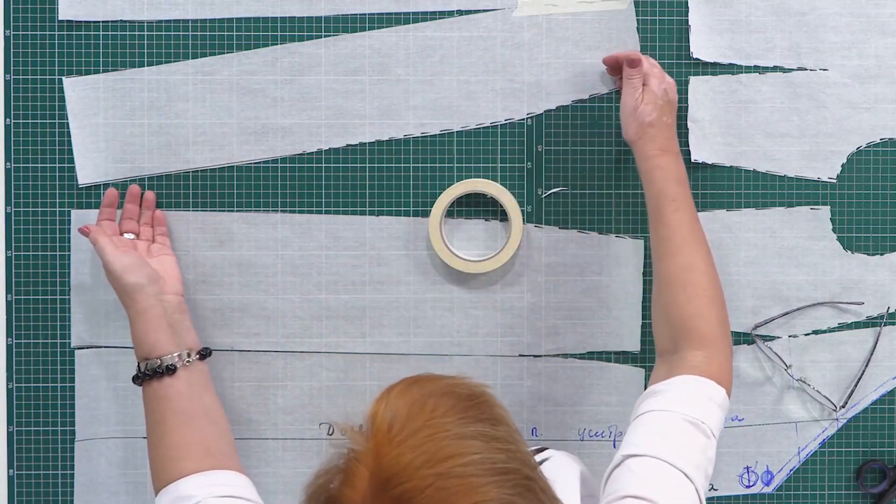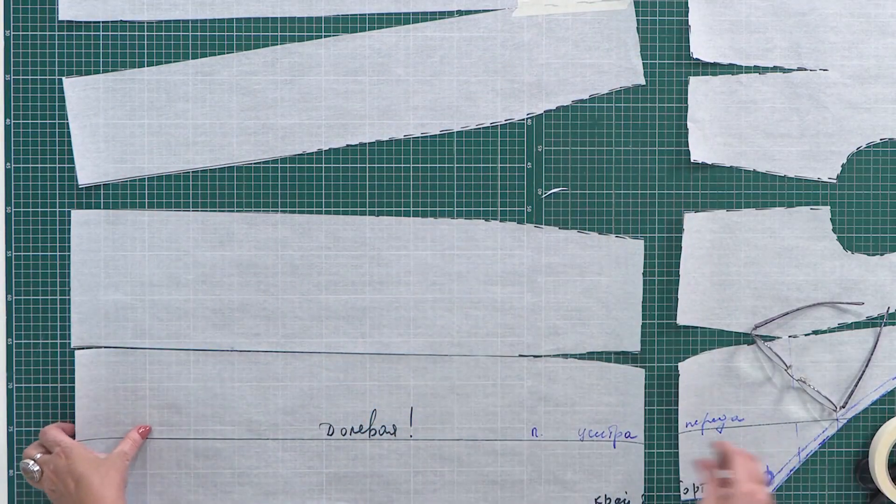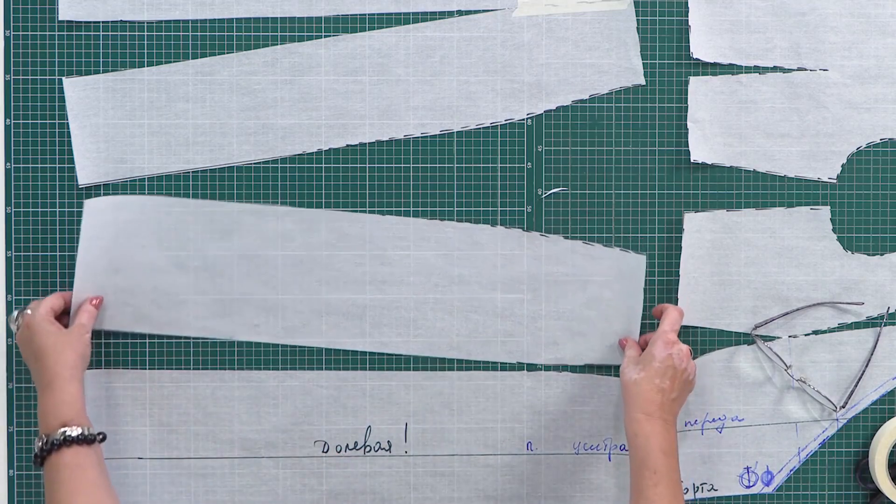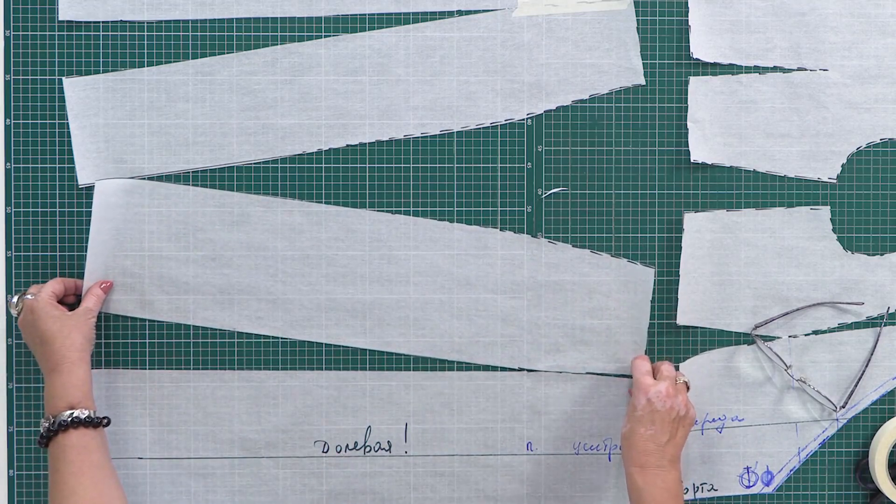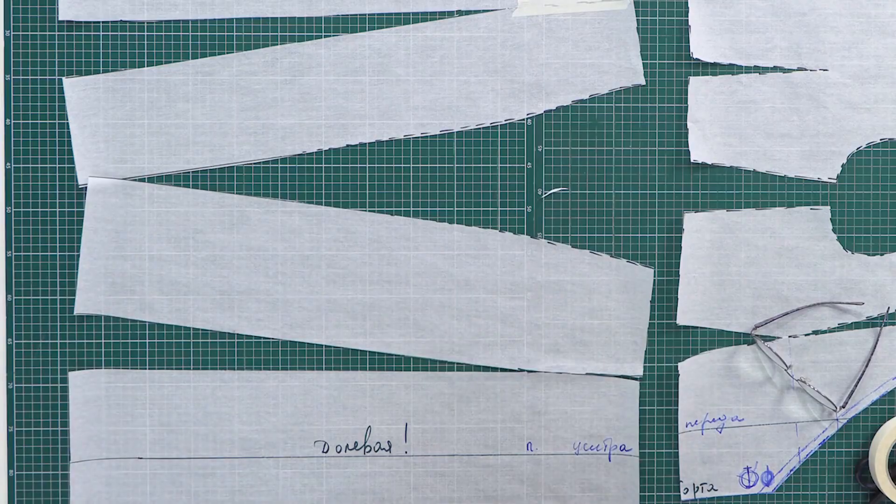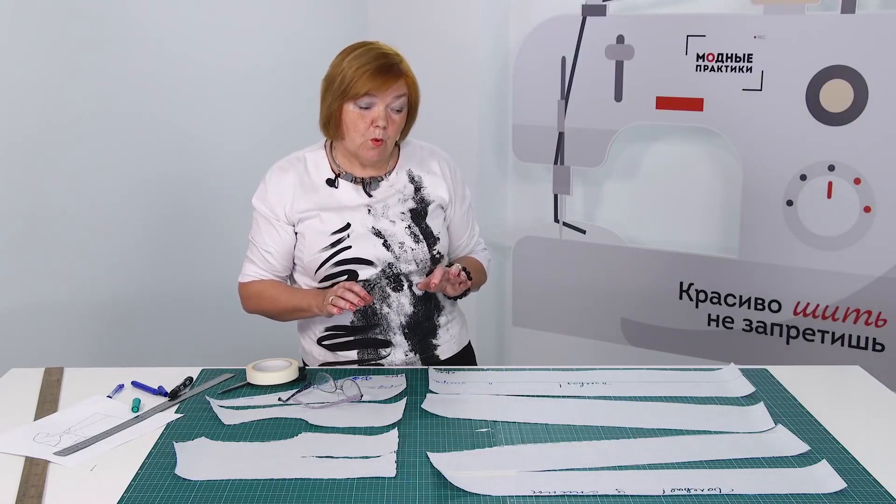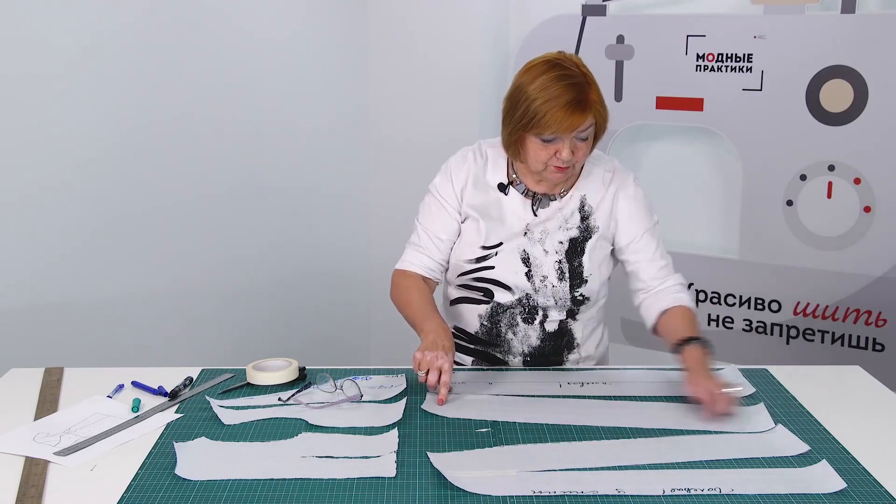The center back on the lengthwise grain. And this is the flare. Next, I need to flare the front the same way. The center front should be cut on the lengthwise grain. And the details should be flared to the side.